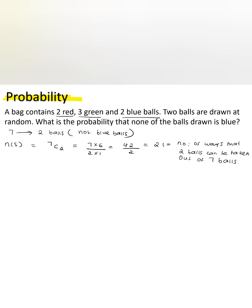So now we have to find the number of events. In order to find the number of events, first we have to know what is the event. The event is no ball should be blue. That means either it should be red or it should be green.